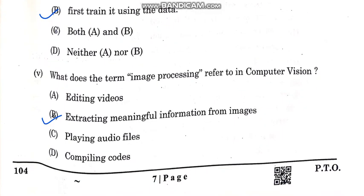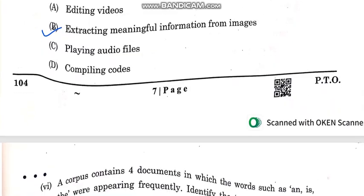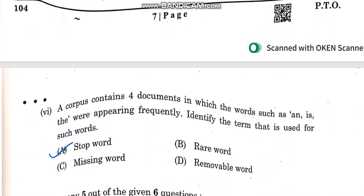What does image processing refer to in computer vision? This option is correct — it means extracting meaningful information from the image.